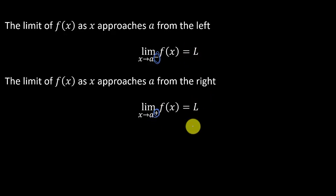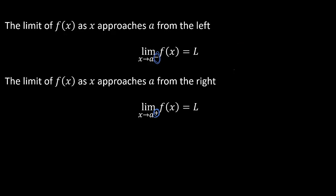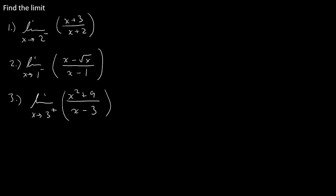We get some number L. Or if the limit does not exist, we could get something besides that — we could get infinity, negative infinity, or it does not exist. So I've got four examples here, let's go ahead and get started.